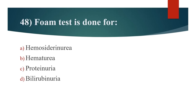48th question: Foam test is done for? Option A: Hemosiderinuria. Option B: Hematuria. Option C: Proteinuria. Option D: Bilirubinuria. Answer is Option C: Proteinuria.